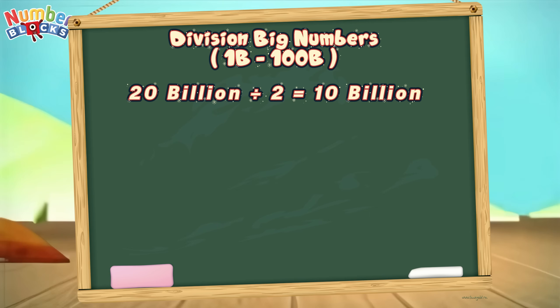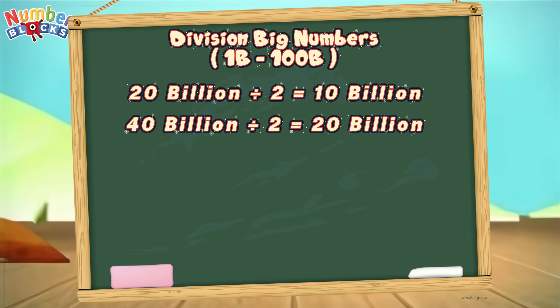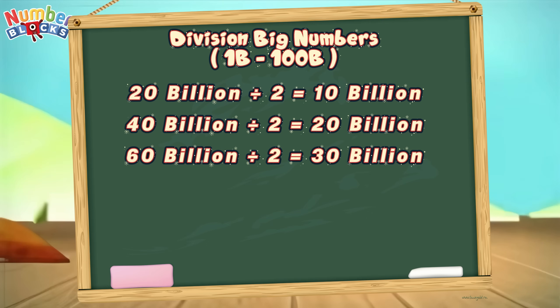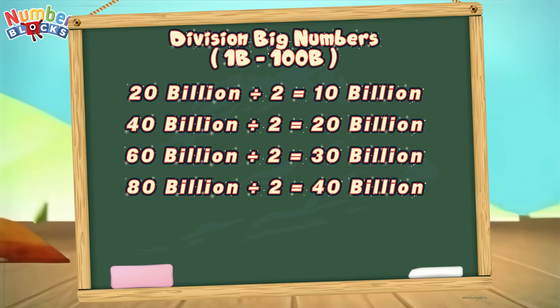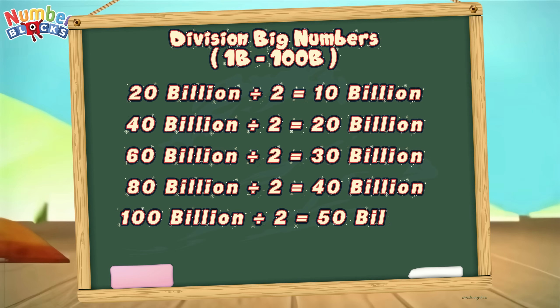40 billion divided by 2 is equal to 20 billion. 60 billion divided by 2 is equal to 30 billion. 80 billion divided by 2 is equal to 40 billion. 100 billion divided by 2 is equal to 50 billion.